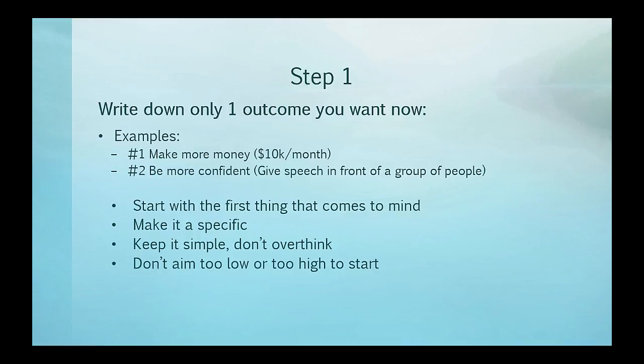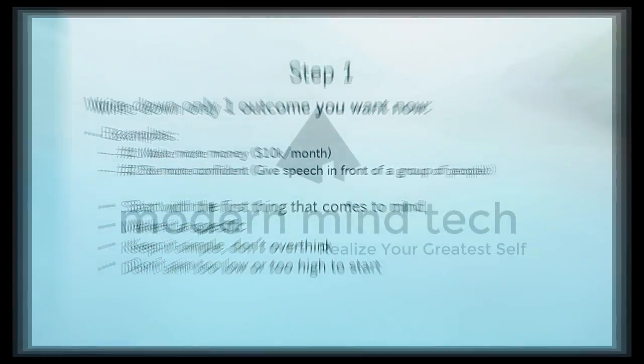You want a goal that is motivating and enticing, but not something like 'I want a million dollars a month' when you're used to making twenty-five hundred a month. So if you're making five thousand dollars a month, seven thousand to ten thousand a month would be reasonable. Once you have that, start with whatever comes to mind, make it specific, and then join me in the video titled step two.